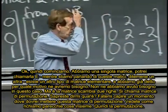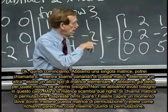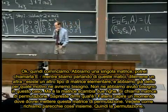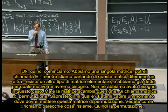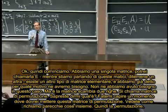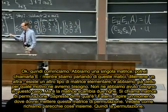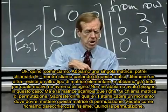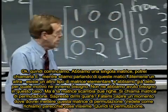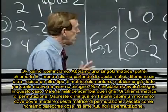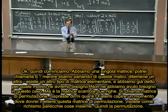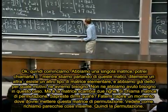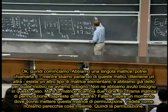So there's a single matrix — I could call it E — that does it all. Now, while we're talking about these matrices, there's another type of elementary matrix, and we already said why we might need it. We didn't need it in this case, but it's the matrix that exchanges two rows. It's called a permutation matrix.